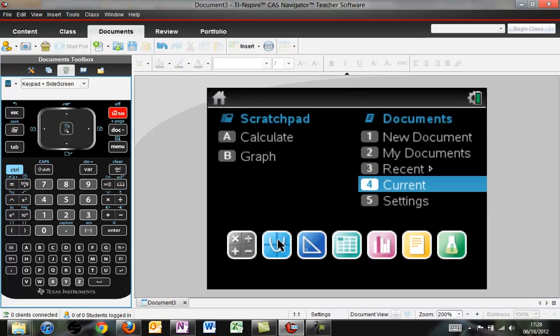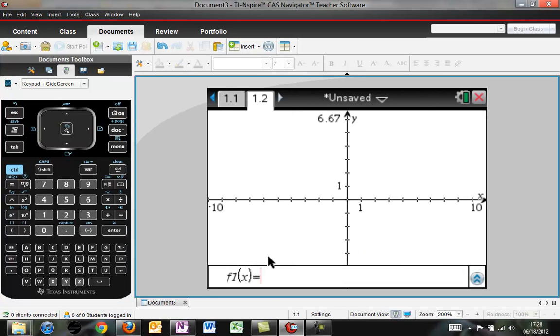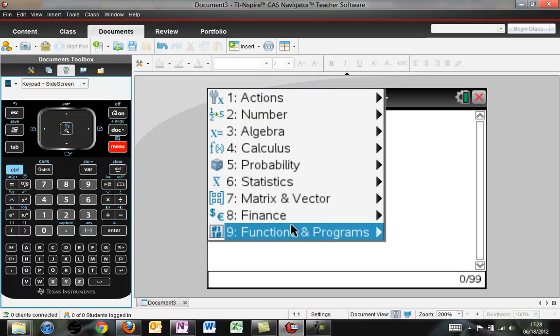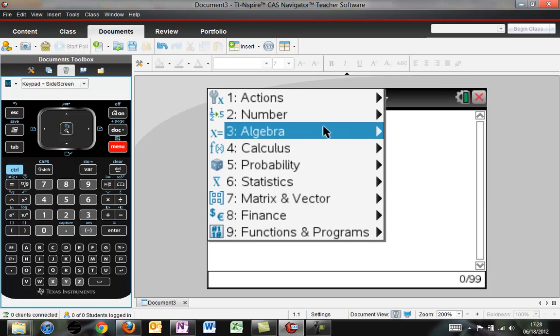You can also go back home and add a graph. And this brings up an xy-axis and an f of x equals, which is where you'd enter the equation that you're trying to graph. In both of these, the menu button will bring up a set of other options that you can do.